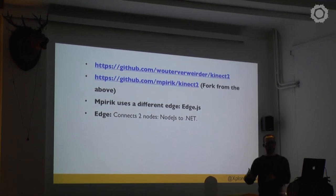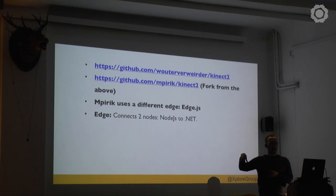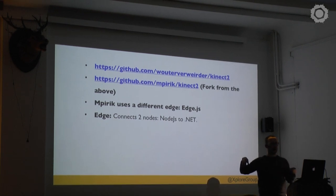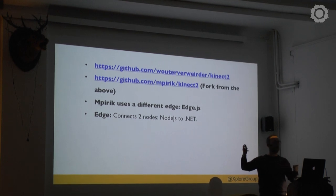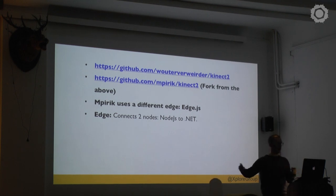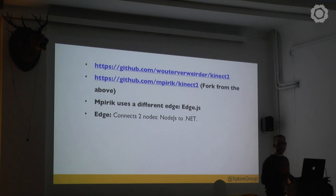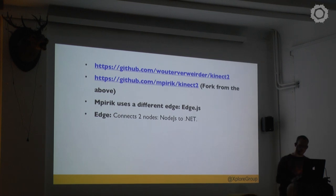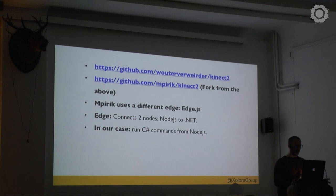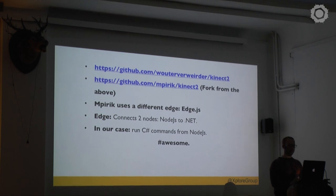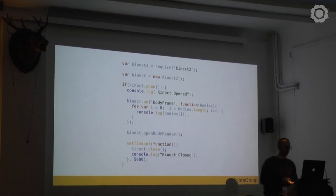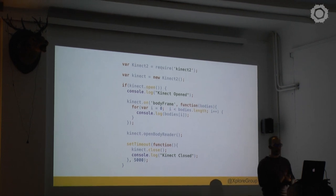Basically what an edge does is it creates a bridge from your Node.js to that environment. This means you can write functions, drivers, or something that hooks up to a piece of hardware, pass it to your Node.js, and for example if you need to take a picture or record sound you can read your stream from a .NET environment into Node.js and pass it along to your frontend. In our case we had to run C# commands from Node.js.